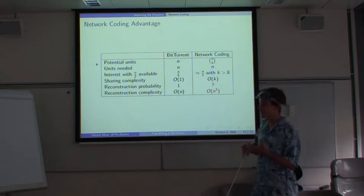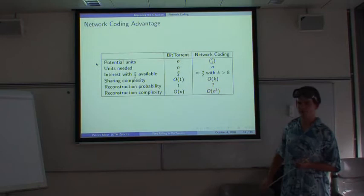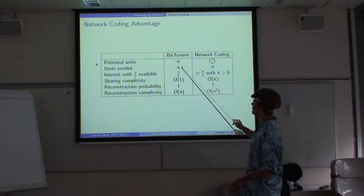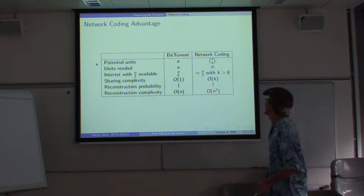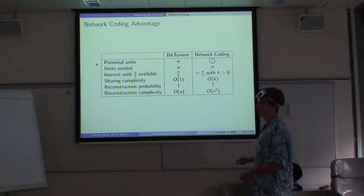The advantage can be seen here. In BitTorrent, we have trading units. I call them the pieces, where we have n, exactly n units. While in network coding, we have potentially n over k, n choose k pieces, which is way, way more. And a client needs to download n pieces in BitTorrent to finish. So he really needs all n pieces available. While in network coding, he also only needs n pieces. But he has a much greater set to choose from.